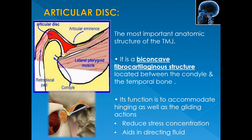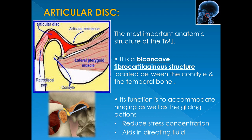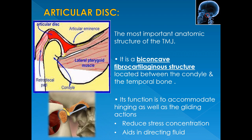The third and most important anatomic structure of the TMJ is the articular disc — a biconcave fibrocartilaginous structure located between the condyle and the temporal bone. It has a central intermediate zone where blood vessels and nerves are absent, and it has anterior and posterior bands. The absence of neurovascular structures in the intermediate zone indicates considerable reaction force along this portion of the joint. The main function of the articular disc is to distribute reaction force more evenly along joint surfaces, reducing stress concentration. It also accommodates hinging and gliding action and directs synovial fluid wherever necessary.